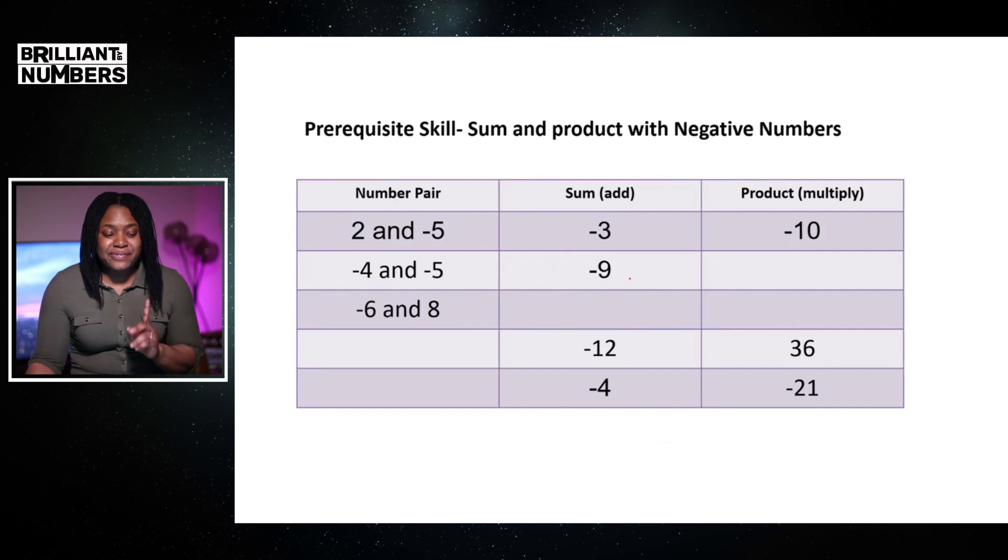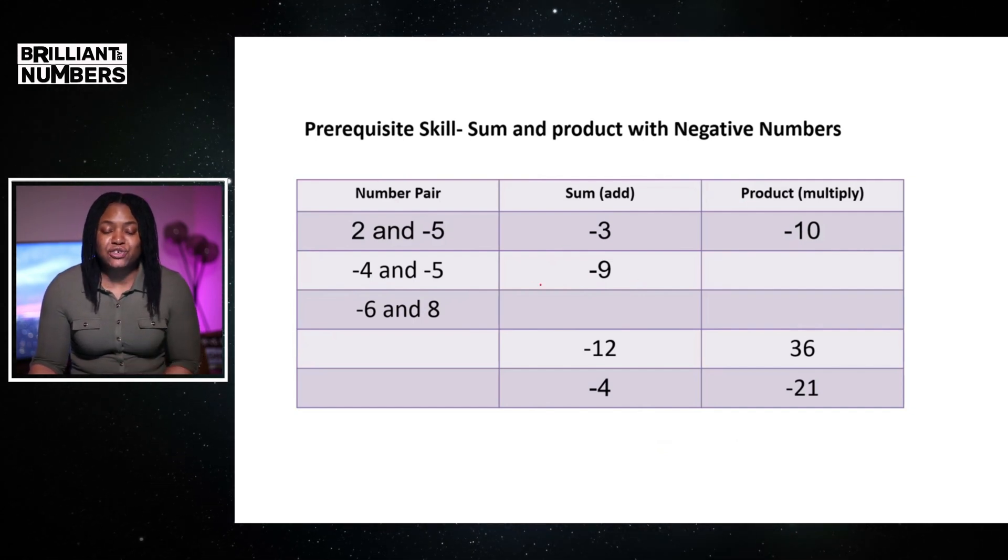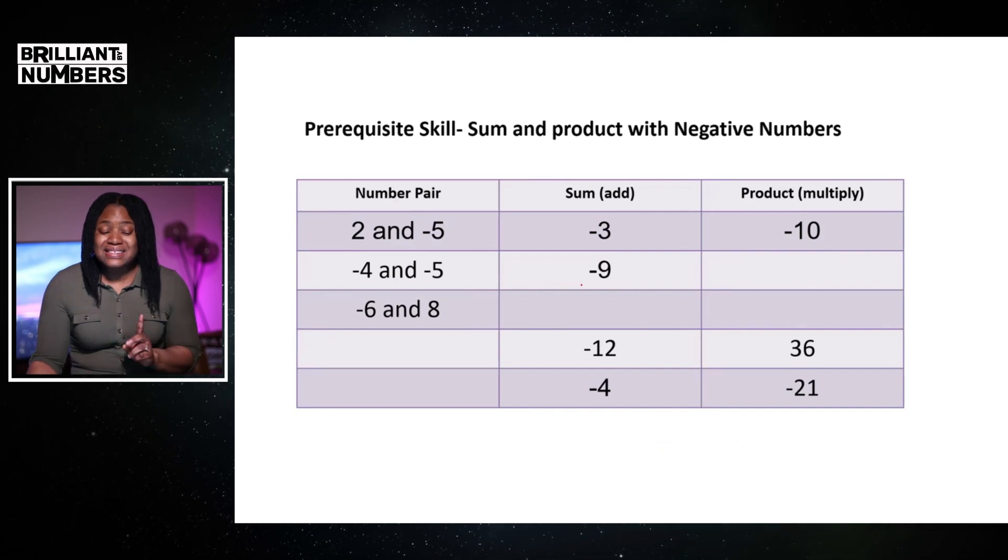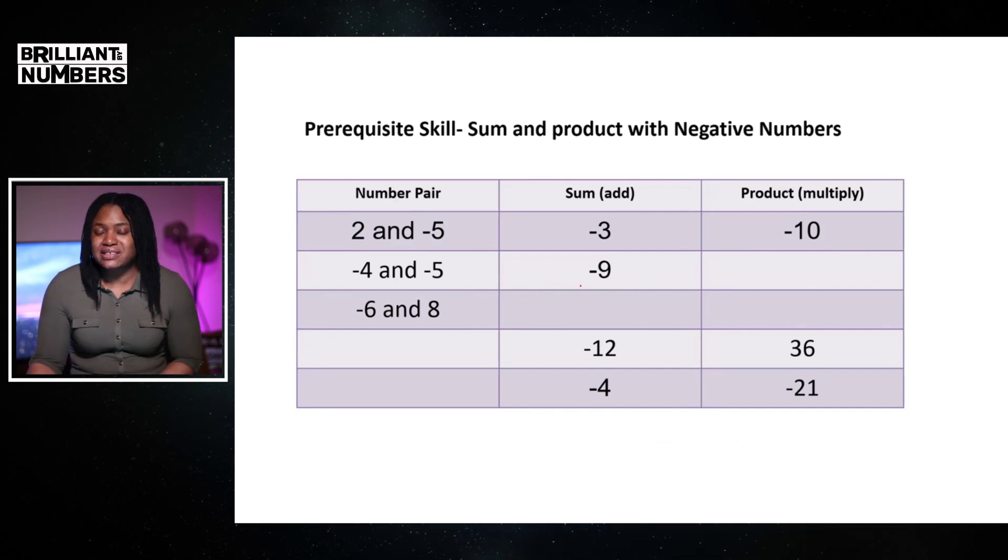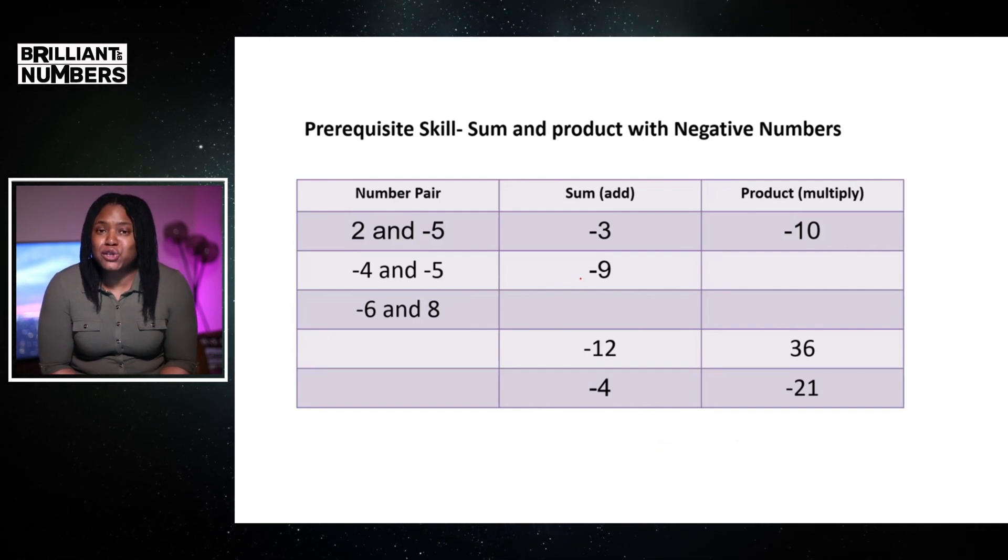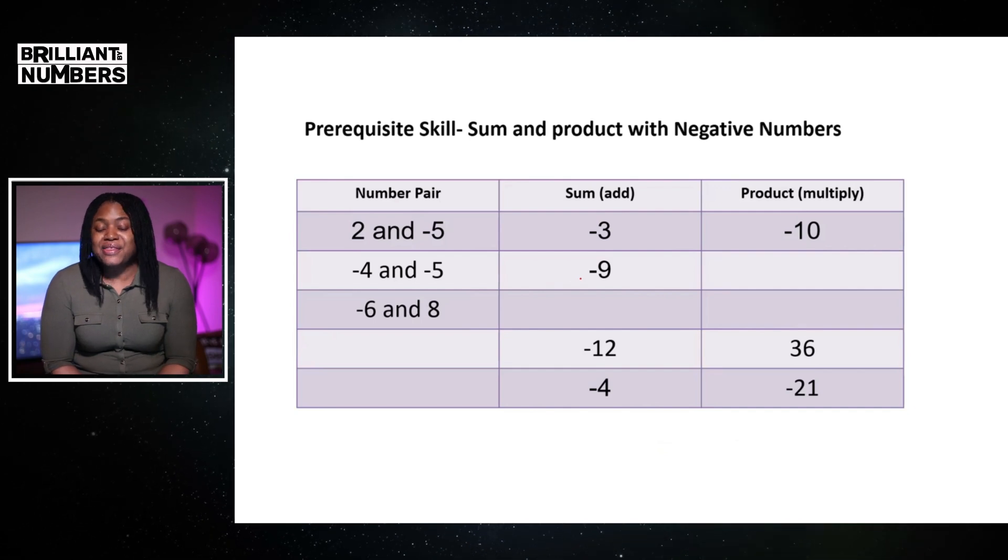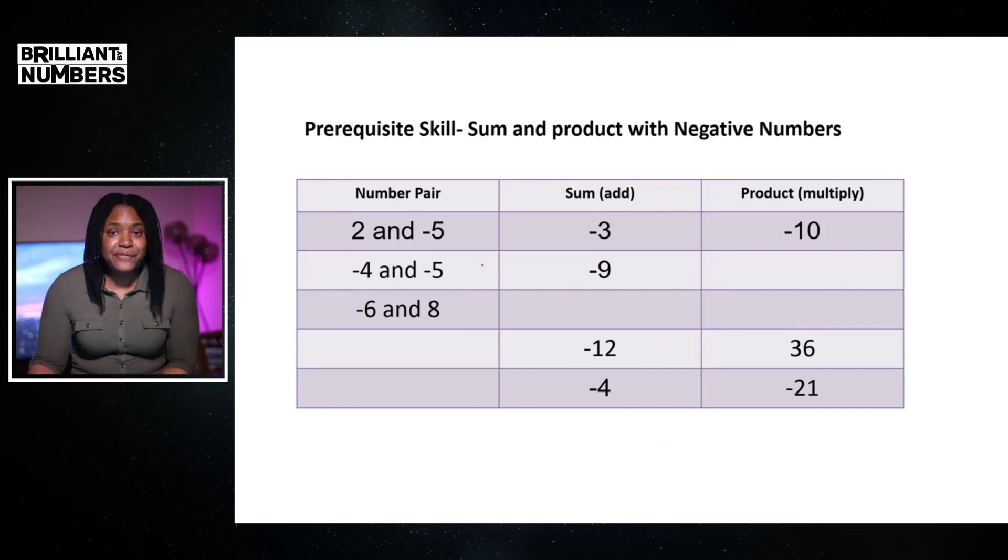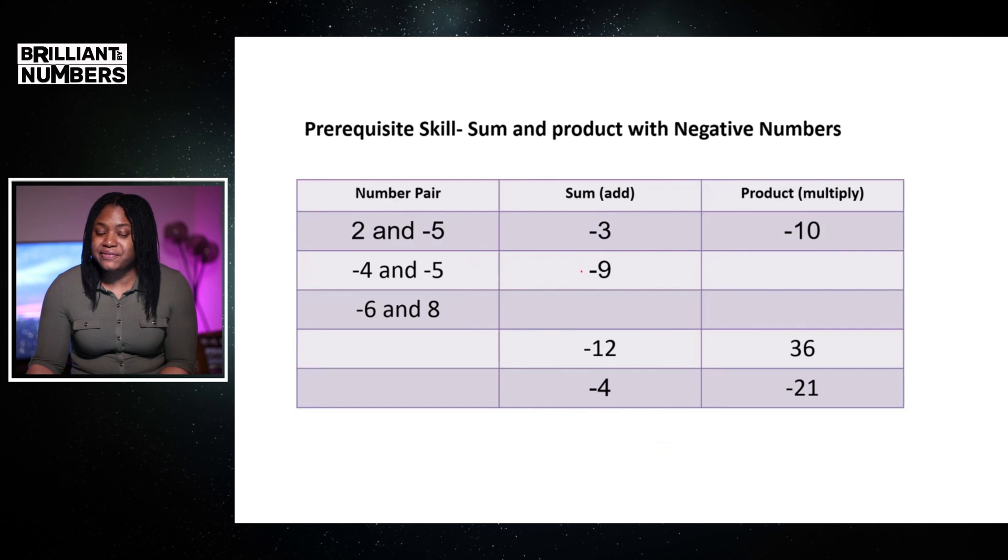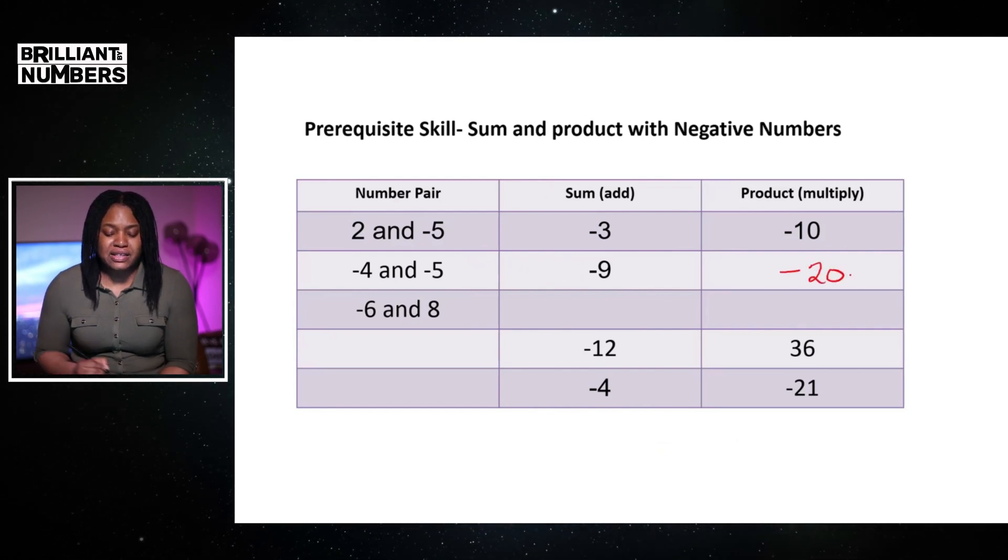Now, the difference here as it relates to the product or the multiplication of the two numbers, this time I have two negative numbers. Now, once negative numbers have a pair in multiplication, the answer is always going to be positive. Therefore, negative 4 multiplied by negative 5 will give me negative 20. So, I'll just fill that in there.